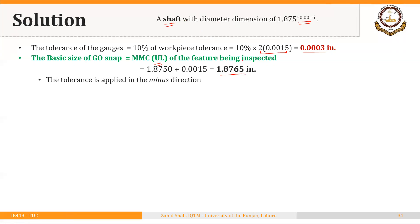As discussed, the tolerance is applied in the minus direction for the go snap gauges. So the go snap gauge will be dimensioned as 1.8765 plus 0, minus 0.003, because we are using the unilateral system for applying tolerances.